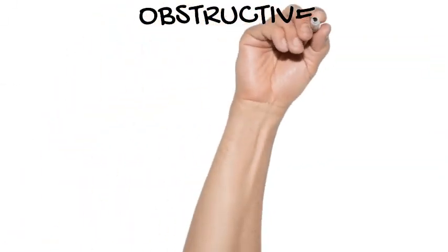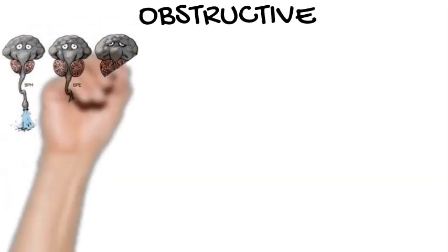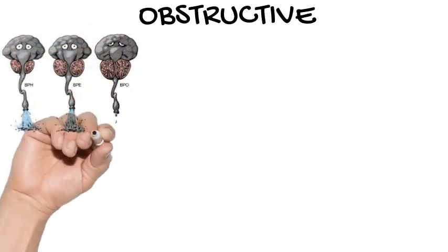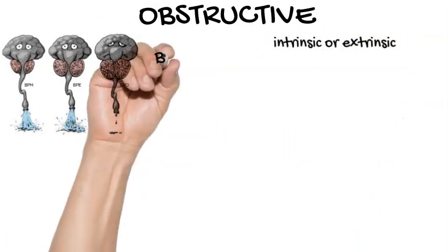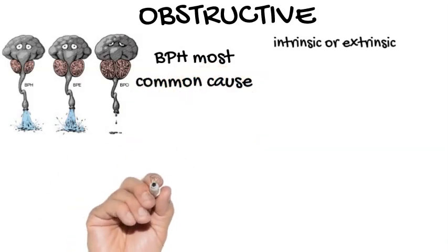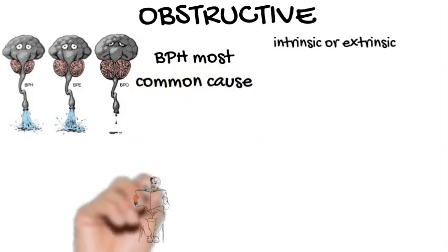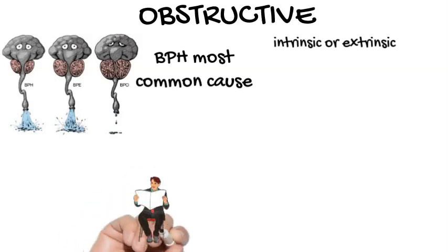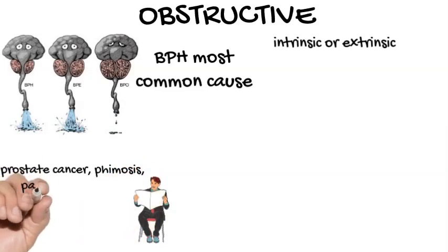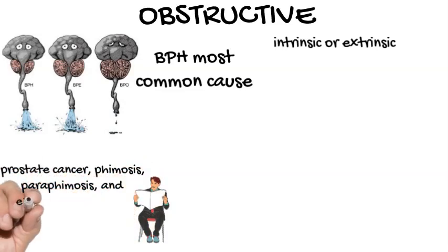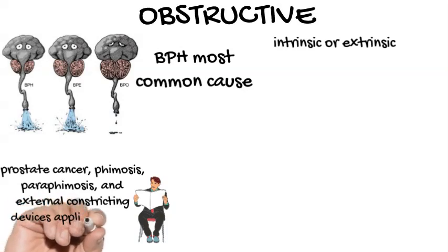Causes of urinary retention — Obstructive. Obstruction of the lower urinary tract at or distal to the bladder neck can cause urinary retention. The obstruction may be intrinsic or extrinsic. The most common obstructive cause is benign prostatic hyperplasia. Other obstructive causes in men include prostate cancer, phimosis, paraphimosis, and external constricting devices applied to the penis.